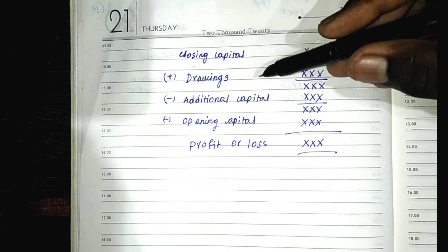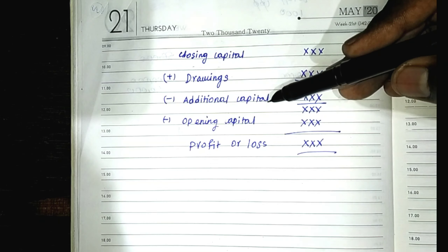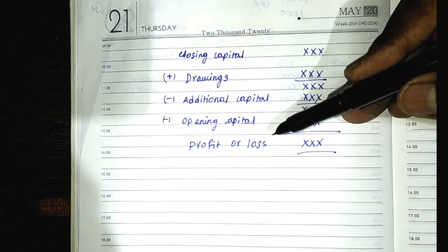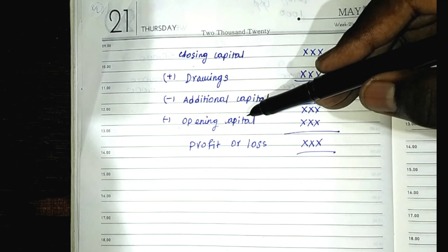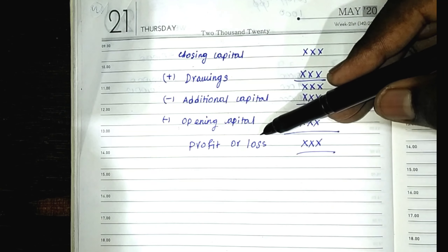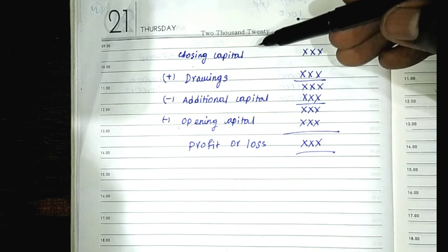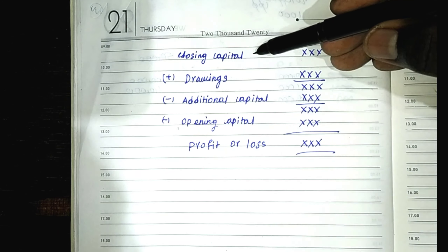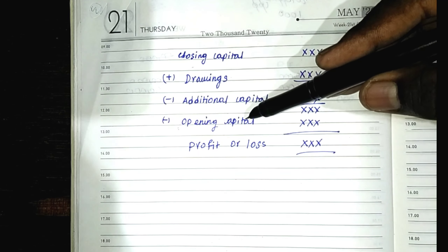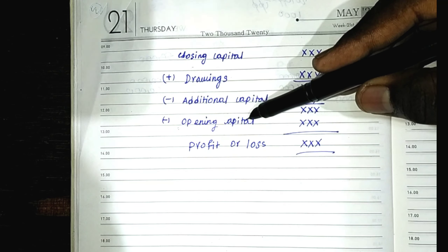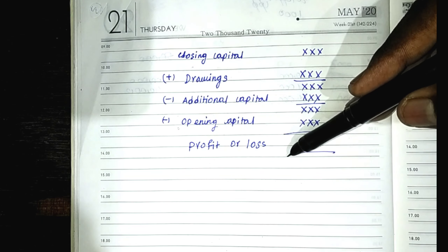The formula is: closing capital plus drawings minus additional capital minus opening capital equals profit or loss. Drawings are added, additional capital and opening capital are subtracted. That gives us the profit and loss.